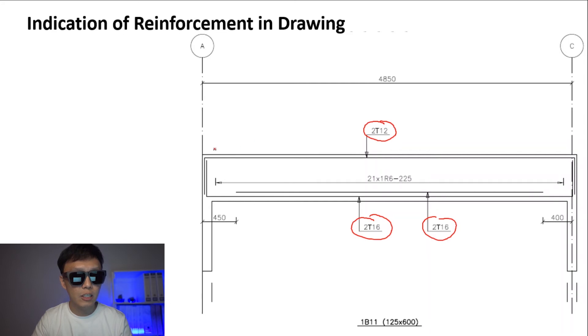Let's look at the section view. If we look at the section view here, we call it section AA. What we will see is there's two bars at top, 2T12. So there's two bars at 12mm diameter. And there's two bars because the 2T16 is extended until here, two bars only. So we will see two bars here, 2T16. This is referring to this drawing.